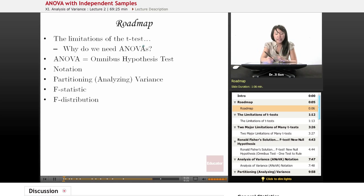An ANOVA is also called the analysis of variance, and the analysis of variance really also could be thought of as the omnibus hypothesis test. So it's still a hypothesis test, just like the t-test, but it's the omnibus hypothesis test, and we're going to talk about what that means.